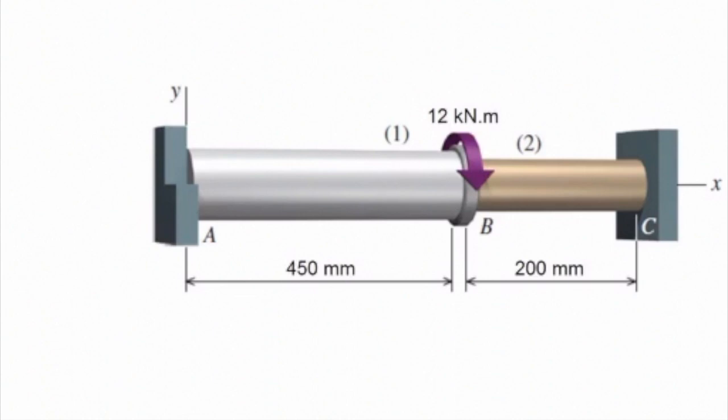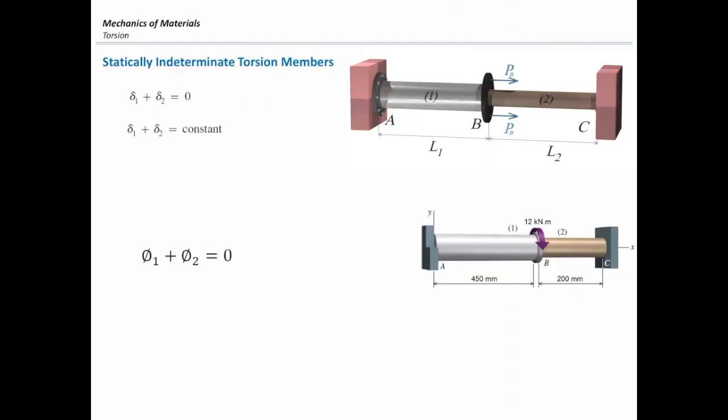So what would be the compatibility of deformation in this case? First, what kind of deformation happens here? It's twist. Twist occurs in torsional elements. How much is the total twist of the shafts in the system? That will be zero. Starting from left and moving all the way to the right, the total twist in the system is zero. So I can say that the compatibility equation for this problem is phi 1 plus phi 2 equals zero.